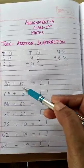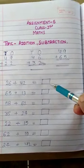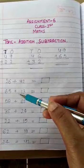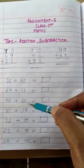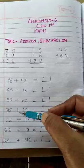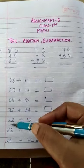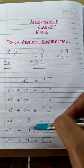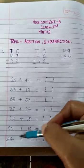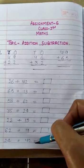Then, 26 plus 42. Here we have to write. 65 plus 13. 58 plus 62. 35 plus 24. 22 plus 15. 62 plus 19. 24 plus 42.